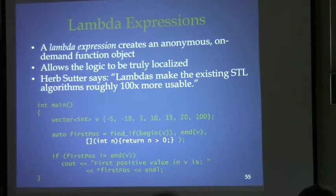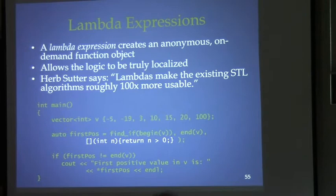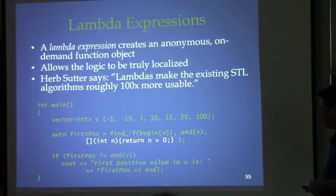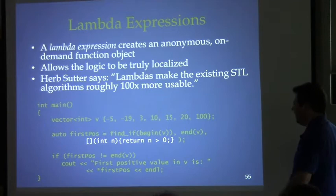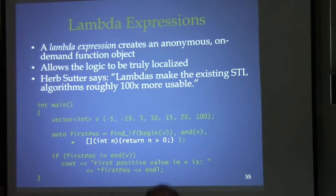Herb Sutter has stated that lambdas make the existing STL algorithms roughly 100 times more usable. You can deduce the return type or specify it using trailing return type syntax — in simple cases with a single return statement, it's deduced automatically. The square brackets are also the capture list: you can specify access to local variables defined in the enclosing scope, which we'll look at next.